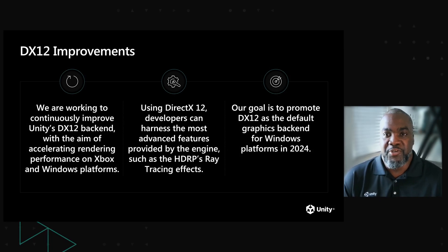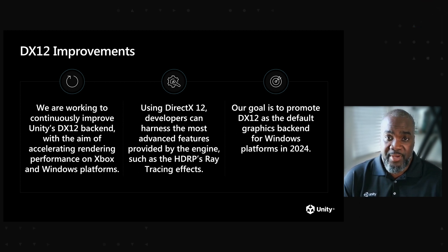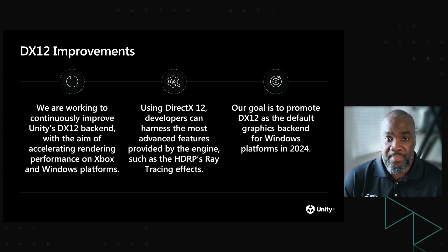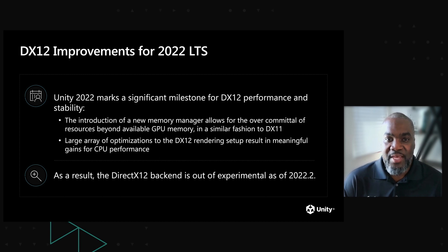We are working to continuously improve Unity's DirectX 12 backend with the aim of accelerating rendering performance on Xbox and Windows platforms. Using DirectX 12, developers can harness the most advanced features provided by the engine, such as HDRP's cutting-edge ray tracing effects. Our goal is to promote DirectX 12 as the default graphics backend for Windows platforms in 2024, especially since it's been the only choice on Xbox platforms for many years now. In order to get there, we have made some improvements for Unity 2022 LTS.